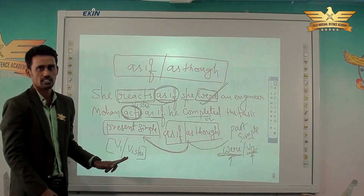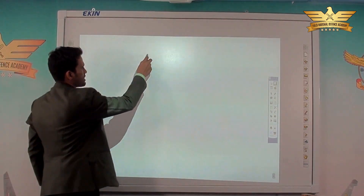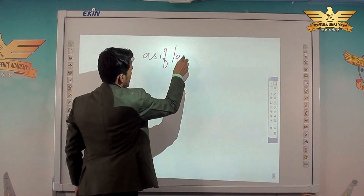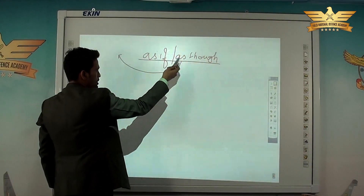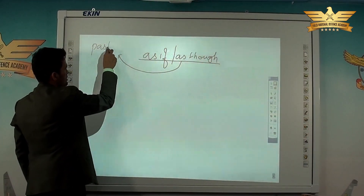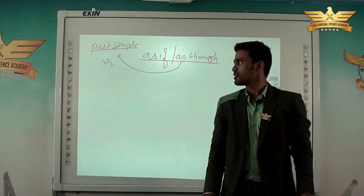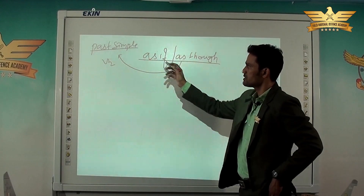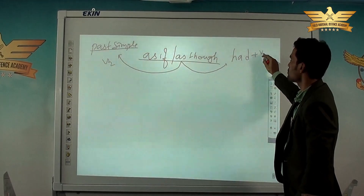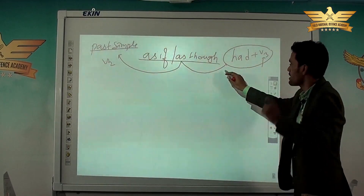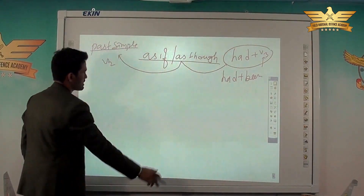You can also use 'as though' instead of 'as if' — both are equally valid. There is another use: if 'as if' or 'as though' is preceded by past simple tense — the second form of the verb — then it must be followed by 'had' plus the third form of the verb if there is an action, or 'had plus being' if there is no action.